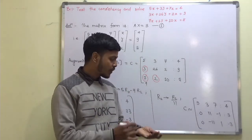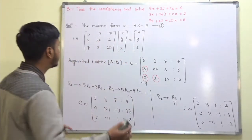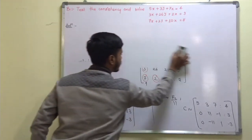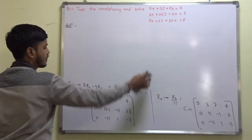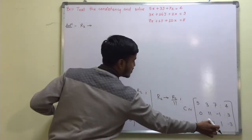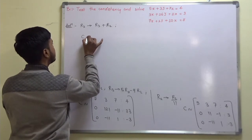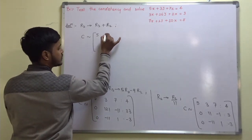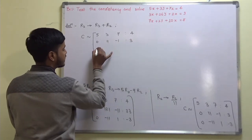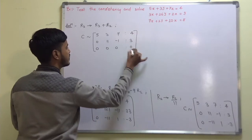Now, as you can see, this looks very easy. To make the element at row 3, column 2 zero, add the third row with the second one. So R3 changes to R3 plus R2, giving C equivalent to: [5, 3, 7, 4]; [0, 11, −1, 3]; and the new R3 is [0, 0, 0, 0].